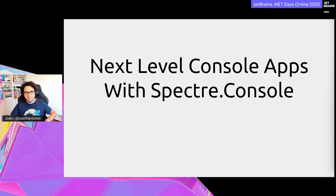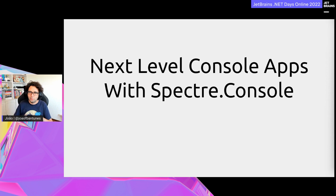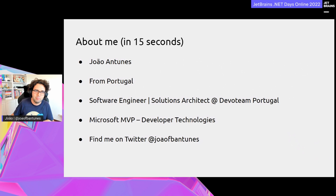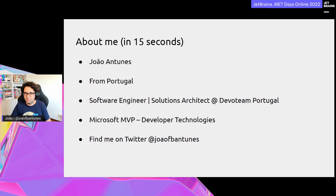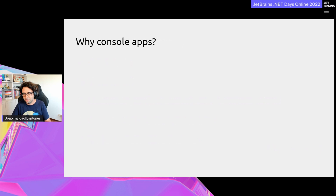Thanks everyone for joining this session. We're going back to basics — we've seen ASP.NET, we've seen Blazor, so back to where it all started: console applications. We'll talk about how to build them with Spectre Console. Briefly about me: my name is Joan Tunge, I'm from Portugal, an engineer at DevleTeam Portugal, a Microsoft MVP in the developer technologies category.